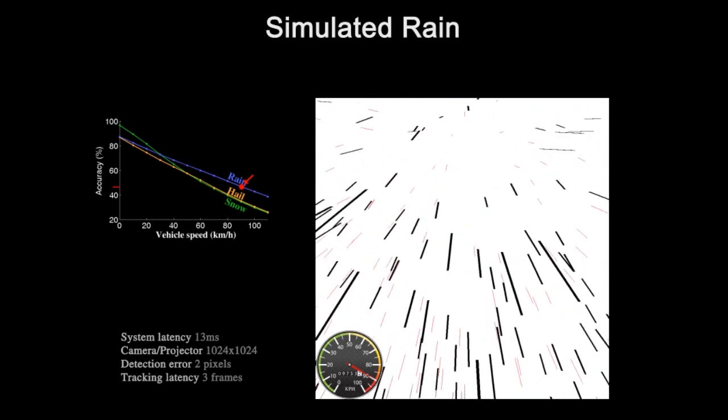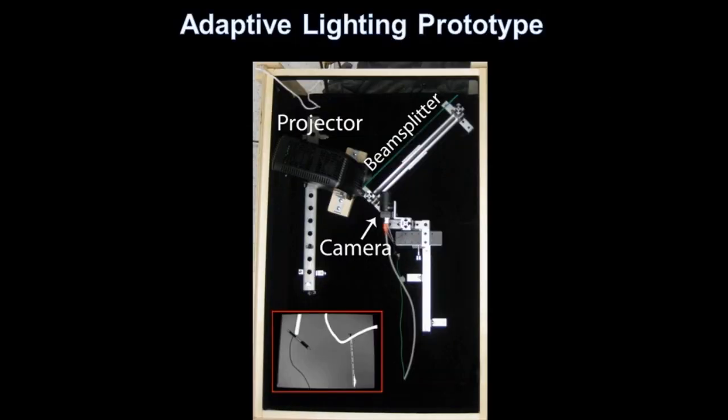We have also created a prototype camera projector system that detects drops and adaptively adjusts the illumination. The system consists of a co-located camera and projector, both running at 120 Hz. Based on the captured images, this prototype system adapts the projector lighting every 8 milliseconds.